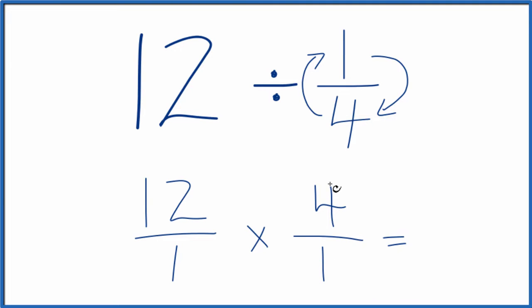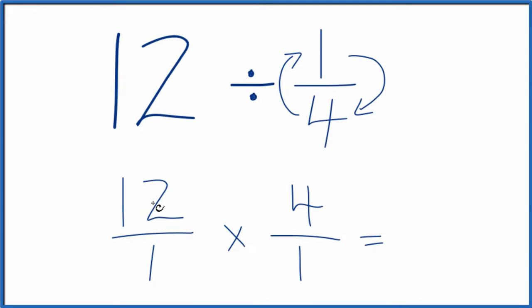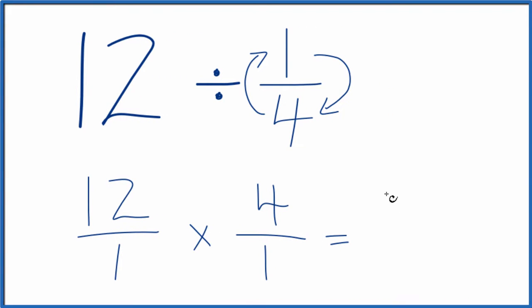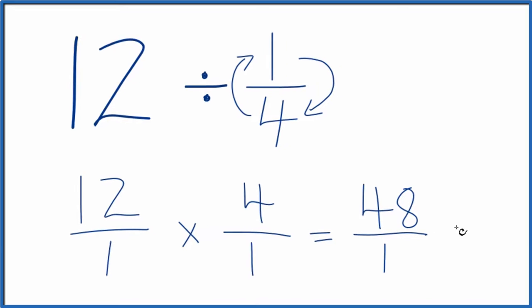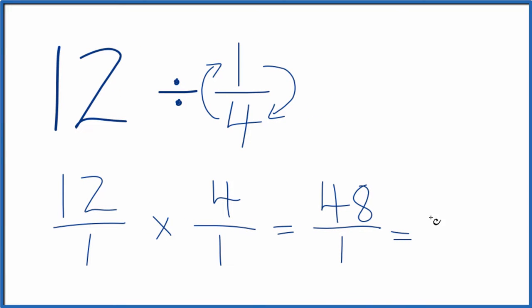When we're multiplying fractions, we multiply the numerators and then the denominators. That gives us our answer. 12 times 4, that's 48. And 1 times 1 is 1. But if you divide a number by 1, you end up getting that number. So this is just 48.